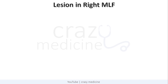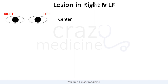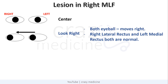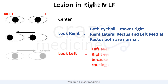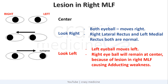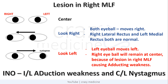Now suppose we have a lesion in the right MLF. If the patient is asked to look at center, that will be the position of the eyeballs. If told to look right, both eyeballs move right because right lateral rectus and left medial rectus are both normal. But if told to look left, only the left eyeball moves left while the right eyeball remains at center, because the lesion in the right MLF causes adduction weakness in the right eye. Therefore, in INO there will be ipsilateral adduction weakness with contralateral nystagmus.